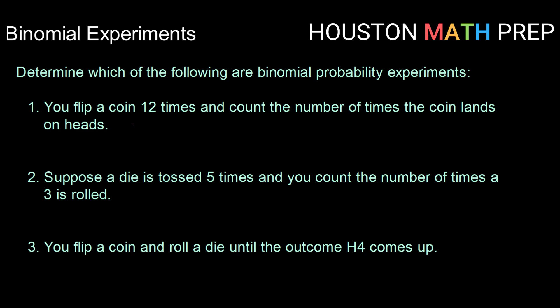The first criteria is that we need a set number of trials. Here we're told that we're going to be flipping the coin 12 times. Also each one of those trials needs to be independent of one another. From what we know about coin flips, one coin flip's outcome should not affect the others. So we are good for the first criteria. We have a fixed number of trials and they are independent.